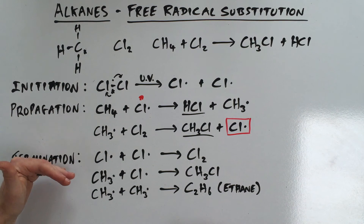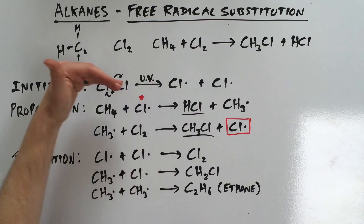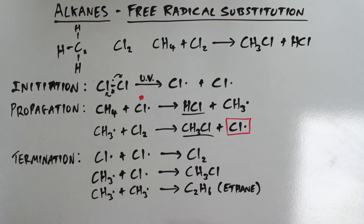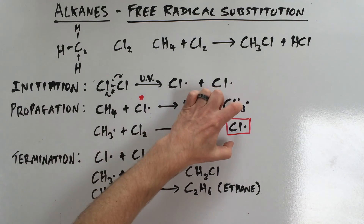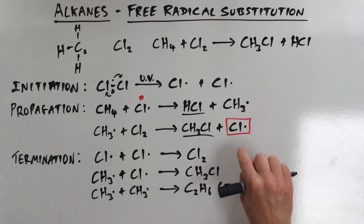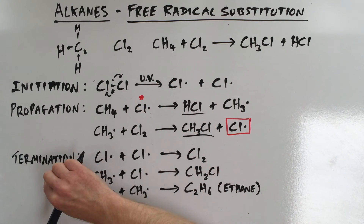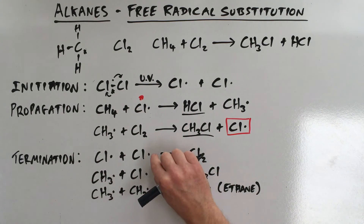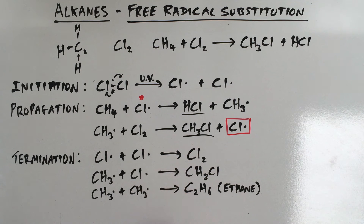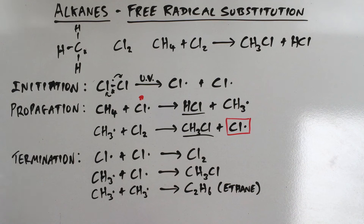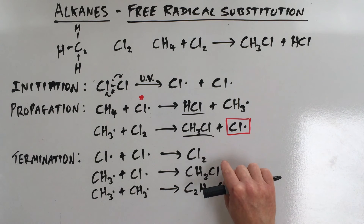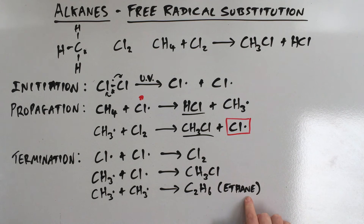To summarize: three stages. First, initiation — one step to form your chlorine free radicals. Second, propagation — two steps where the actual reactions occur; it's a chain reaction. Third, termination — three possible equations where the combination of two free radicals forms a product.